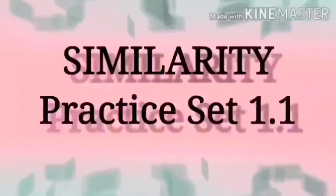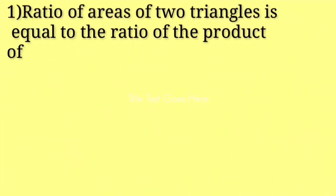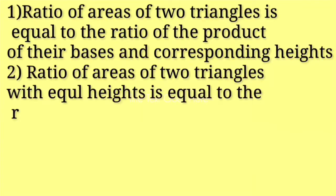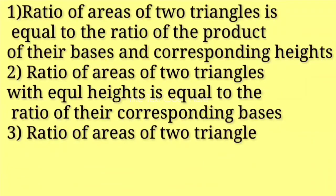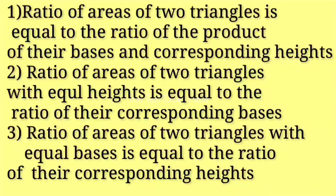Practice Set 1.1 is based on the properties of areas of two triangles. The first property is: ratio of areas of two triangles is equal to the ratio of the product of their bases and the corresponding heights. Second property: ratio of areas of two triangles with equal heights is equal to the ratio of their corresponding bases. And the third property: ratio of areas of two triangles with equal bases is equal to the ratio of their corresponding heights.